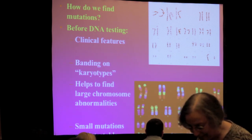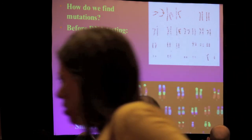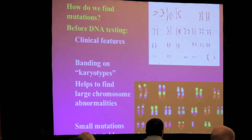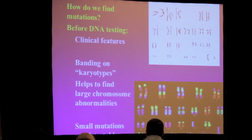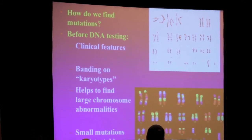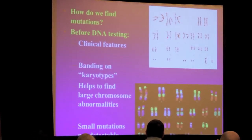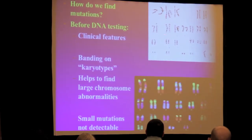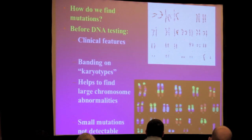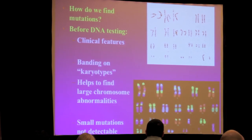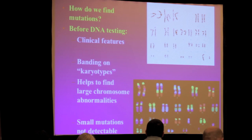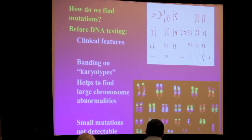So how do we find mutations? Before there was DNA testing, we looked at clinical features and really strictly made these diagnoses based on clinical features. Then, in the 1970s in particular, there was the capability of lining up chromosomes — these are all chromosomes here, lined up and showing banding patterns with different staining. We could try to look for large chromosomal abnormalities by looking at the karyotype, but even now, small mutations — which is largely what we're talking about with genetic disorders — were just not detectable.